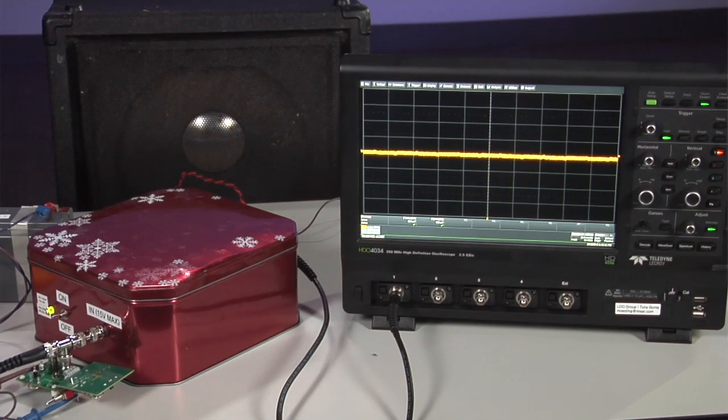Now let's switch to the LT3042. Its output noise is barely discernible on the speaker and just a flat line on the oscilloscope, a significant improvement in performance.